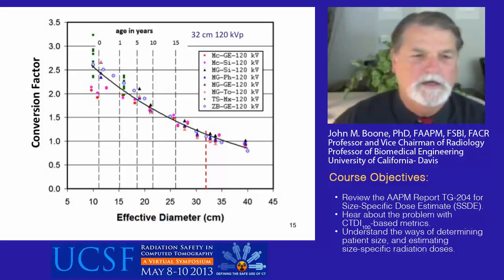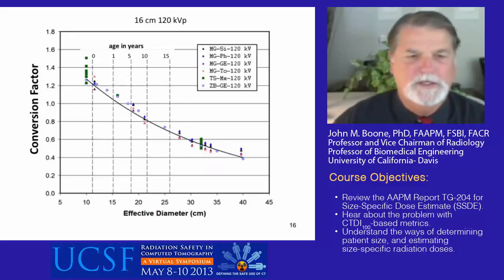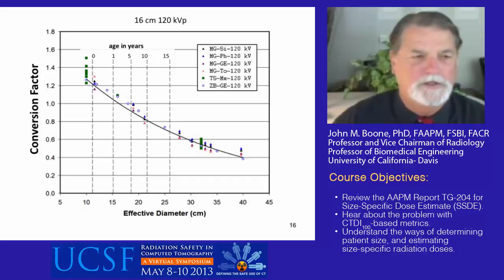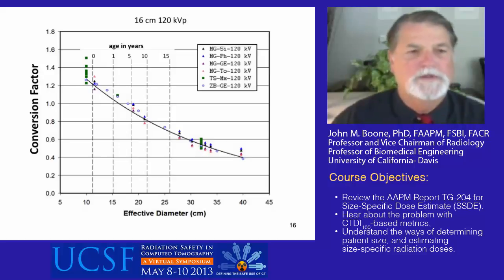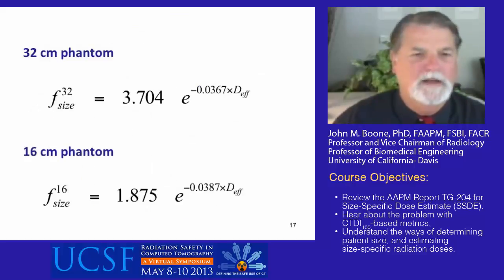For CT scanners using a 16-centimeter diameter PMMA phantom, the equivalent data shows the curve going through approximately unity at 16 centimeters. These two curves, for the 32-centimeter and 16-centimeter diameter phantoms, are well fit by an exponential function.